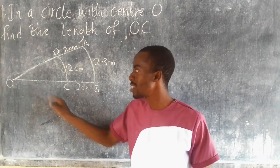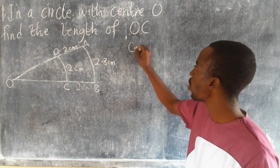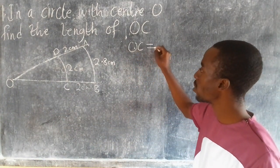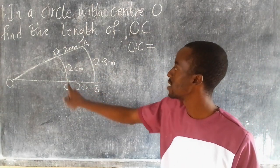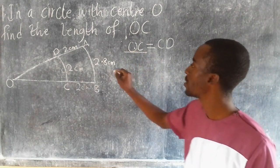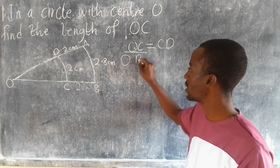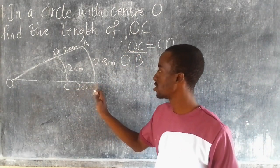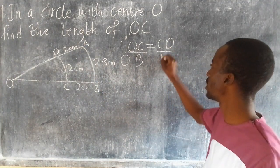So to find the value of OC, we need to say OC is equivalent to CD. CD over OB - OB is equivalent to BA.